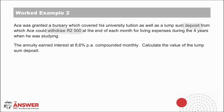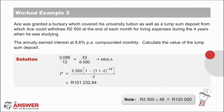Pause the video here and give it a go first on your own. Hopefully you used the memory for the monthly interest rate. X's value is the monthly withdrawal of R2,500, and there are 48 withdrawals over 4 years. The answer is the value of the initial deposit — just over R100,000. This would have been the amount left over from his bursary once his tuition was paid.